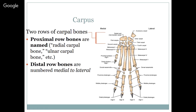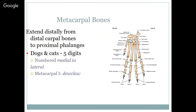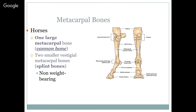The metacarpal bones extend distally from the distal carpal bones to the proximal phalanges. On dogs and cats, we have five digits in the front, numbered from medial to lateral — so the dewclaw would be metacarpal one. In horses, they stand on their third digit, so they have one large metacarpal bone called the cannon bone, with two smaller vestigial metacarpal bones on either side called splint bones — non-weight-bearing but with some tendon attachment.